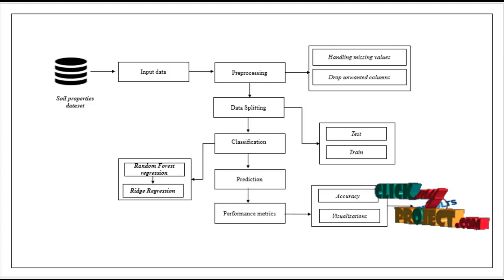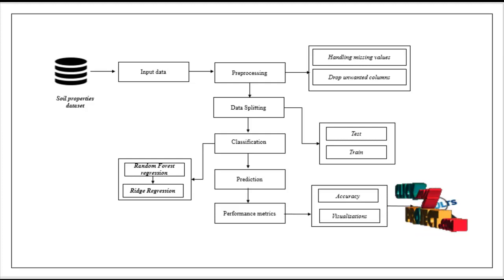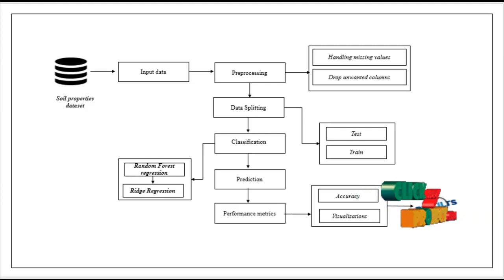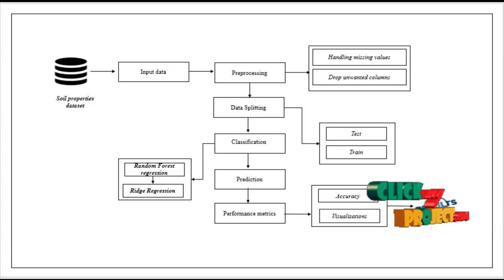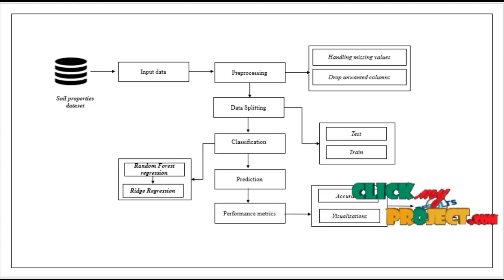Then we have to select the input dataset with the help of the pandas package. After that we implement the preprocessing step, where we check for any missing values present in the dataset. If there are missing values, we replace them with zeros to avoid wrong predictions. Then we drop any unwanted or unnecessary columns from the dataset.